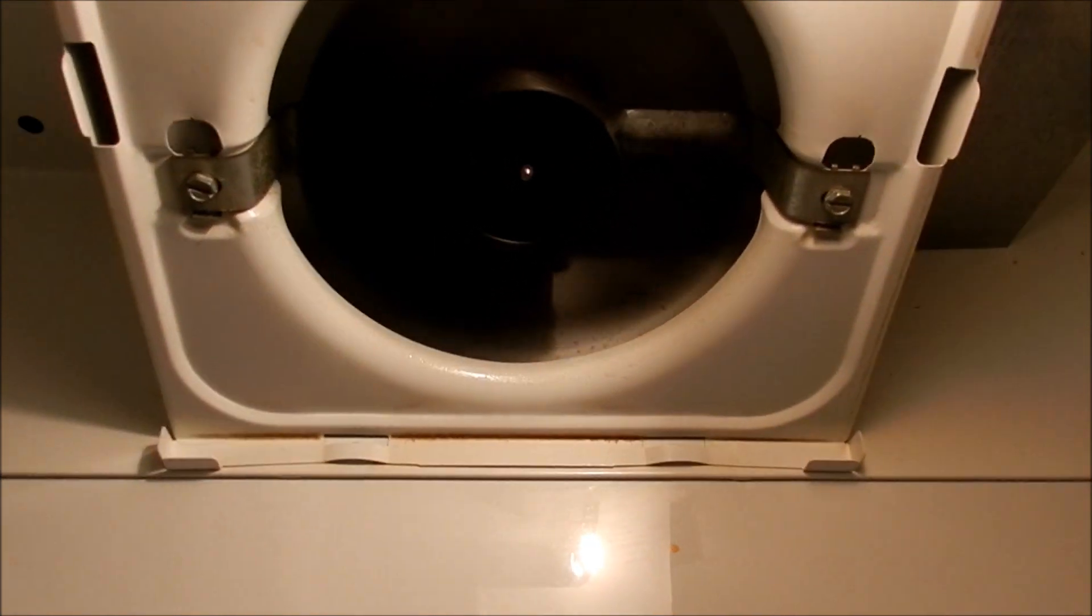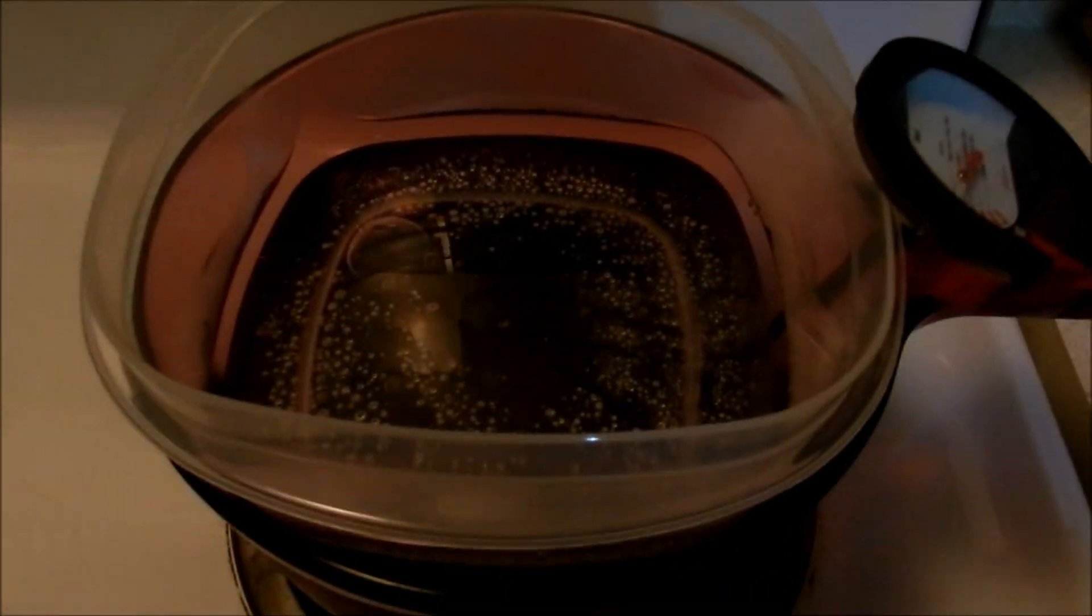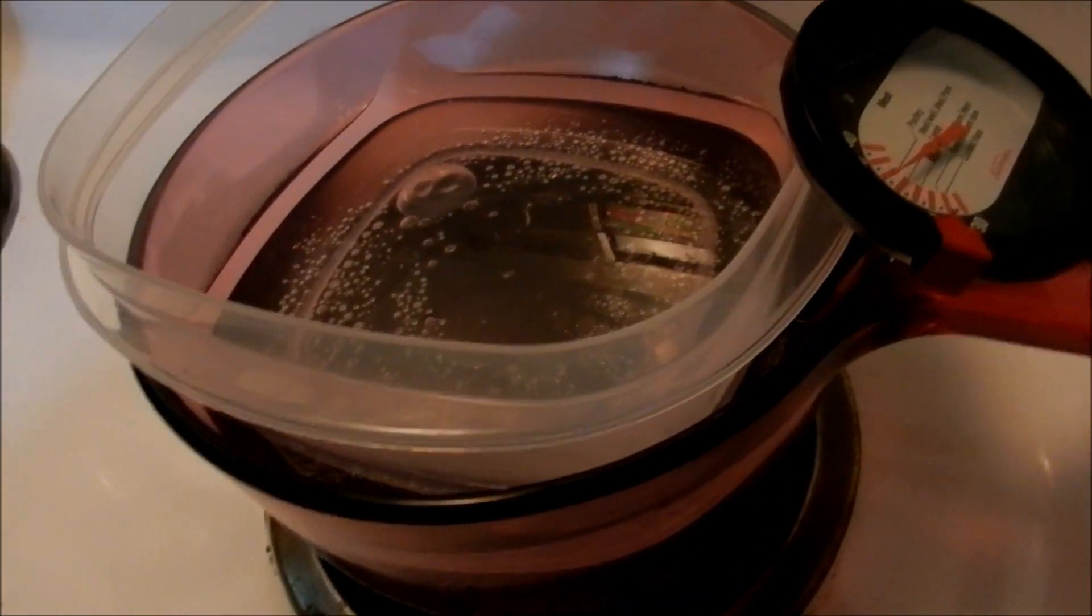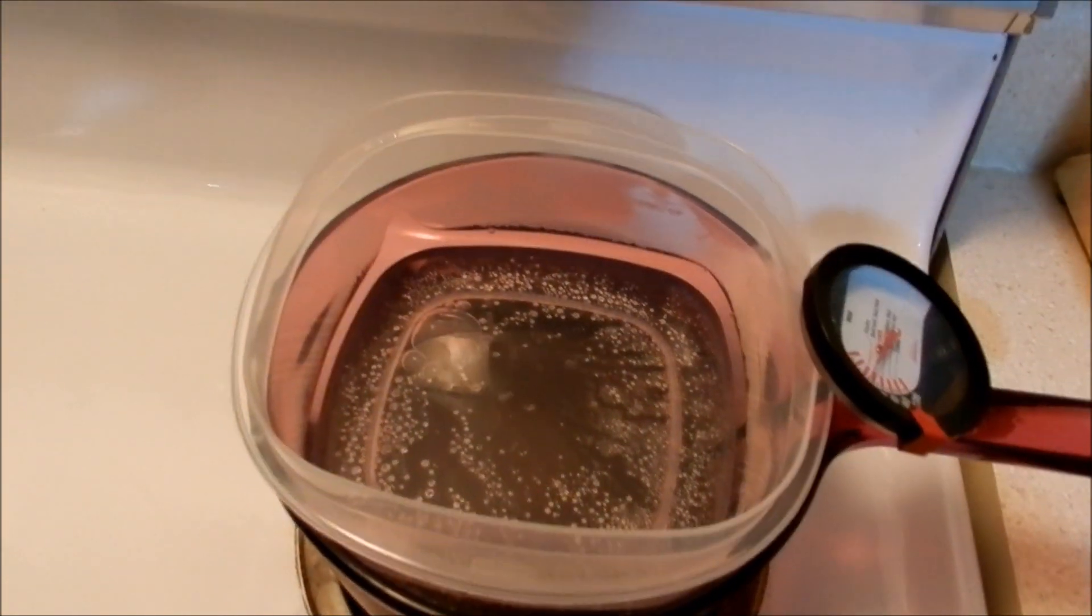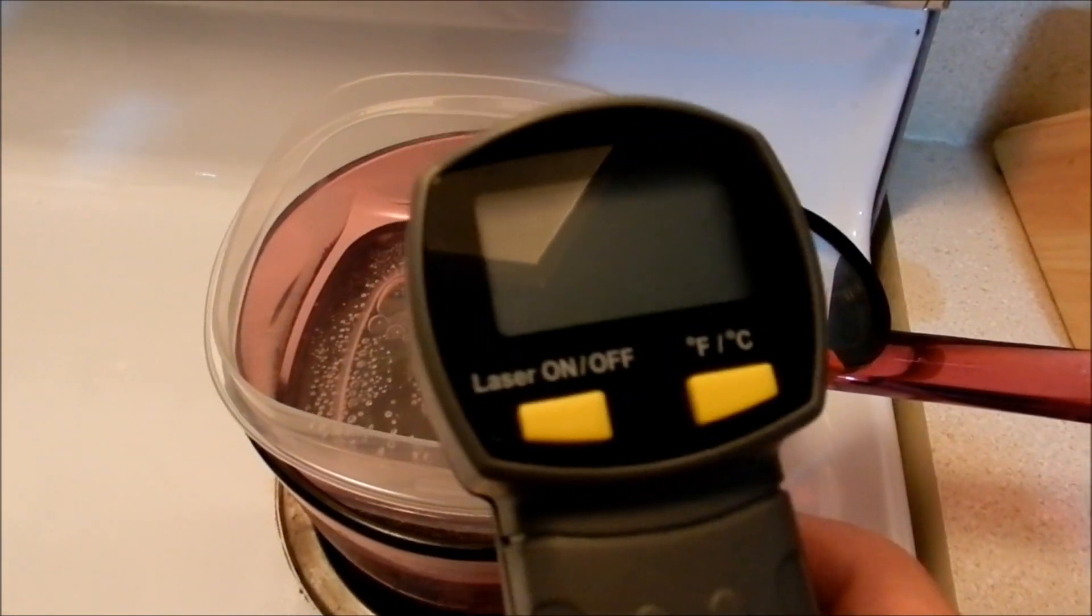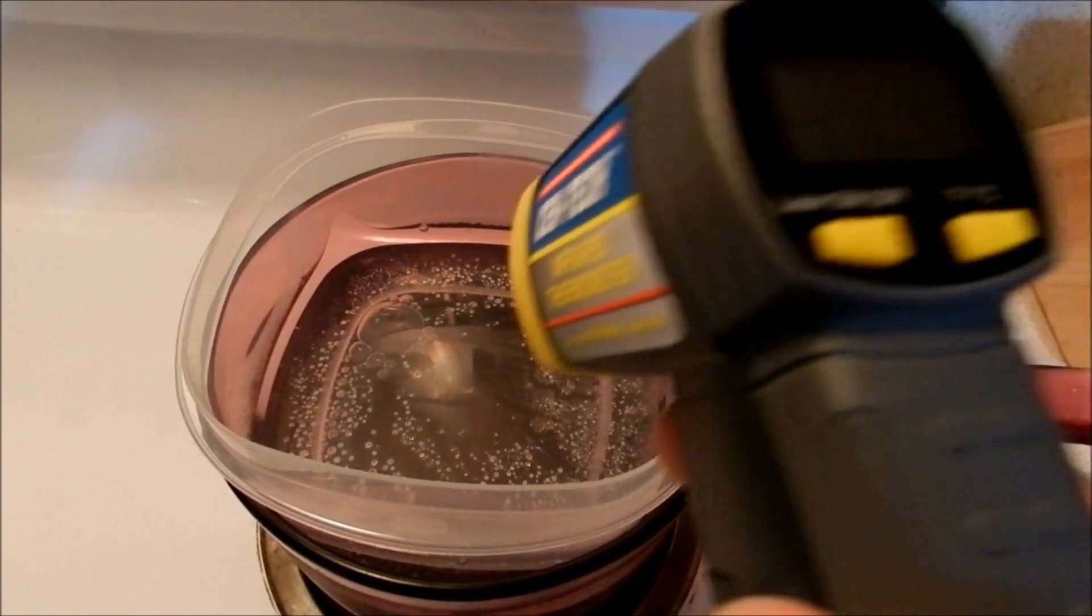And you need to keep your exhaust fan on because it does emit fumes. You do not want to be breathing it. You can do this outside on a hot plate. It's highly recommended. And to check the actual temperature of the etching solution use the infrared thermometer.